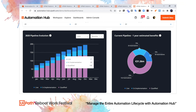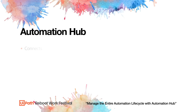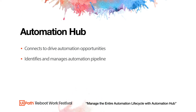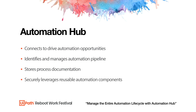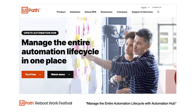This is just our demo environment, but we look forward to seeing what you do with Automation Hub. To wrap up: Automation Hub is the one place where your company can connect to drive automation opportunities forward. It gives you one place to identify and manage your automation pipeline, one place to store your process documentation, and one repository to securely leverage reusable automation components and the automations your team builds. To get started, simply go to uipath.com/automationhub and start your free trial.